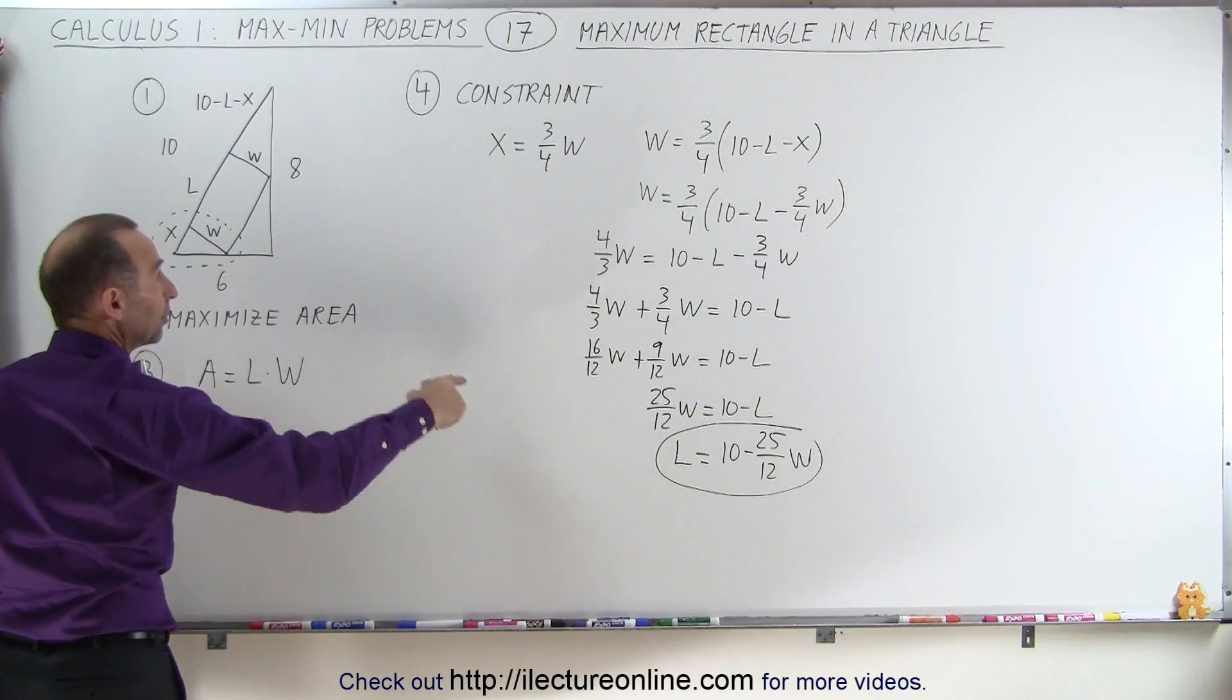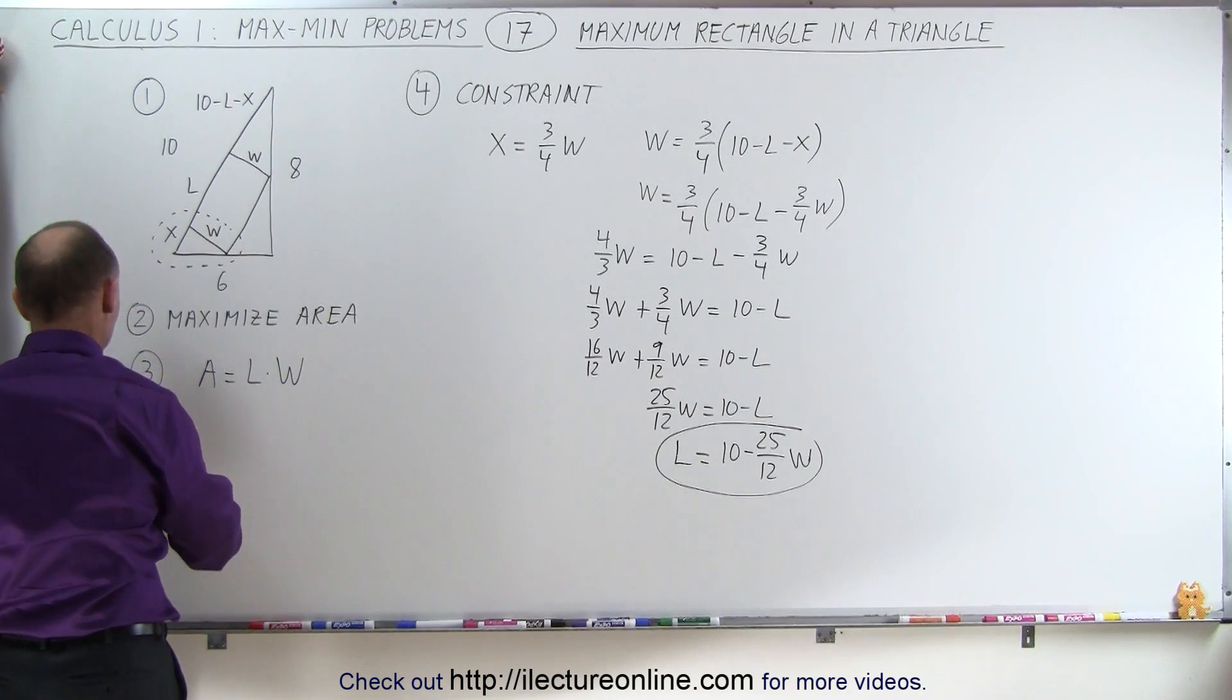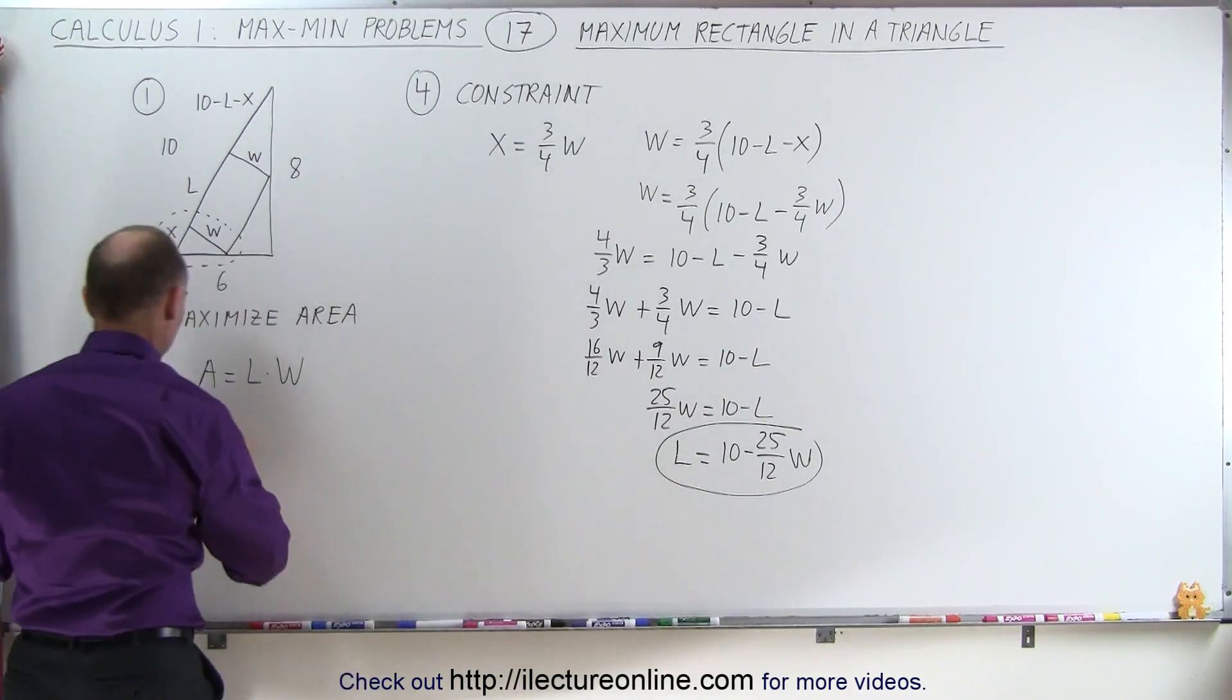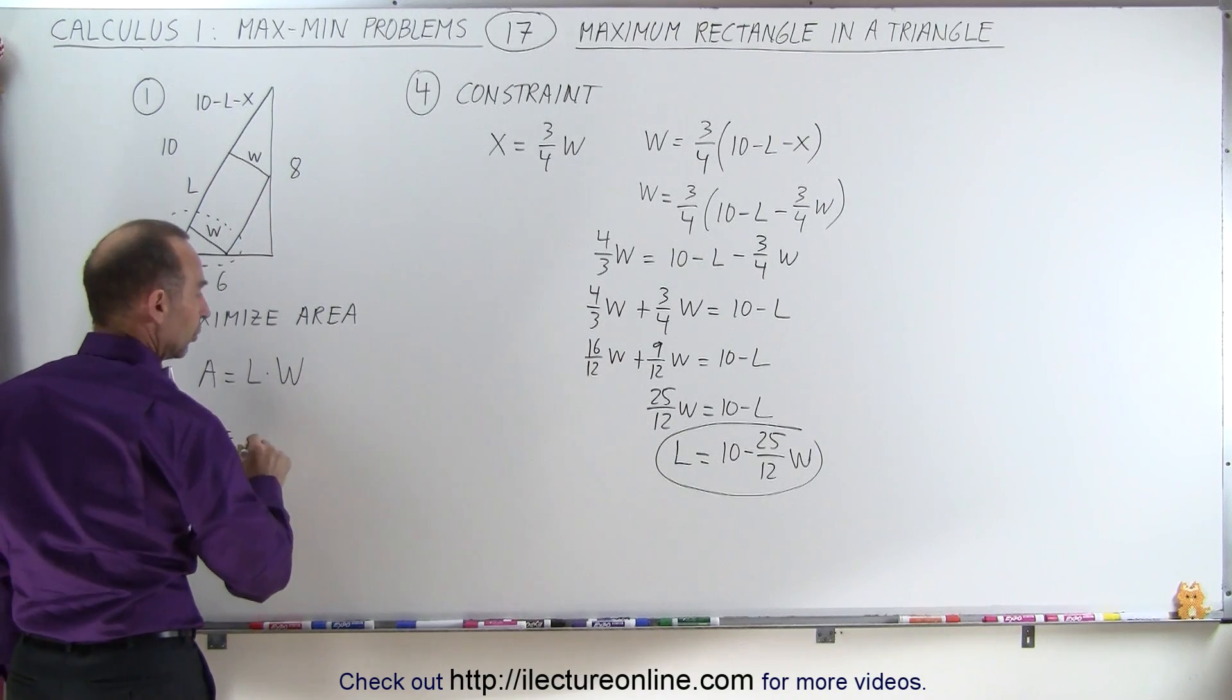So now we have, so that would be step 4. Step 5 would be to substitute for L what L is equal to.